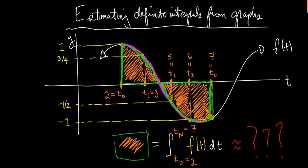That shaded region represents the value of the definite integral. Remember how this works: if the function lies above the x-axis, the value of the integral over that region is going to be positive. But as soon as the graph goes underneath the x-axis, the value of the integral will be negative over that region. The stuff outlined in green is above the x-axis so the integral makes that positive, but below the x-axis the integral assigns a negative number. Looking at the picture, it looks like there's more minus than plus, so the integral over the entire interval from 2 to 7 should be negative.